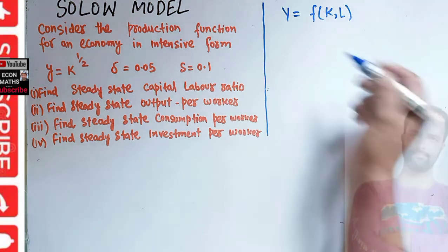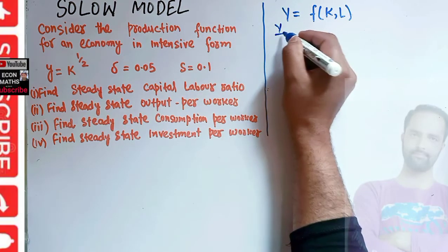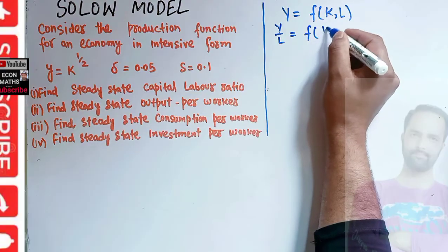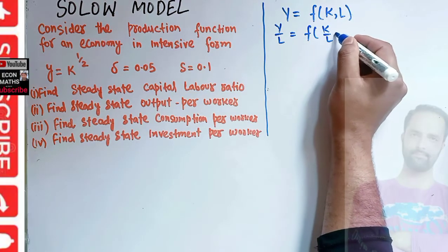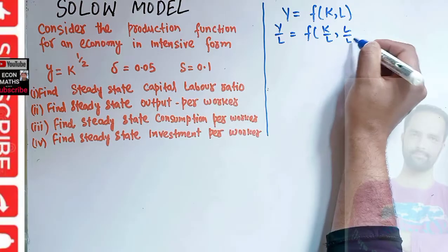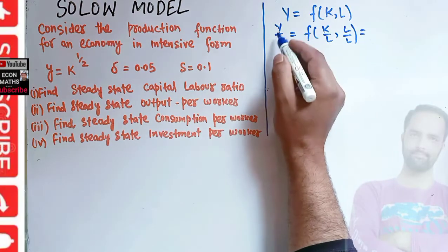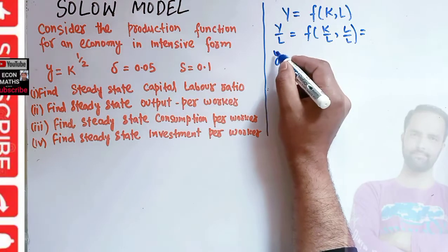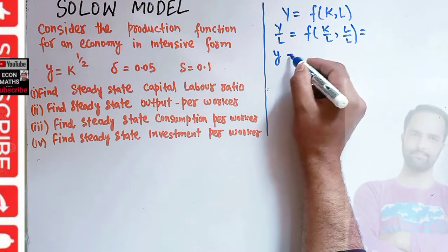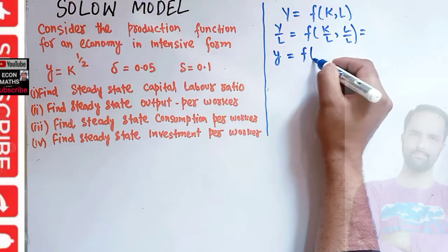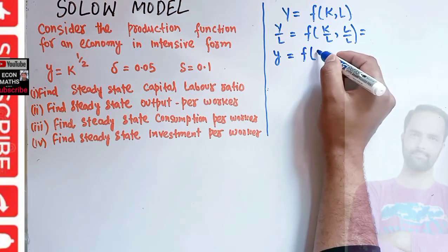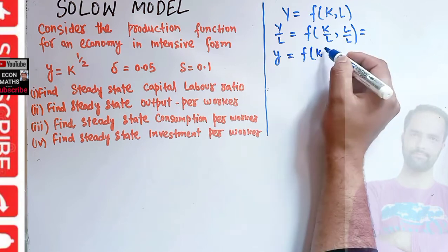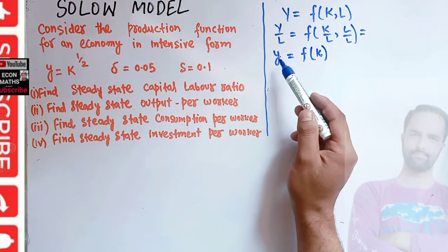In intensive form, we divide each variable by L. That means y upon L is equal to f of k upon L and L upon L, which gives us output per worker — written as small y — as a function of k upon L, denoted as small k. And L upon L is one, so our output is a function of capital-labor ratio.